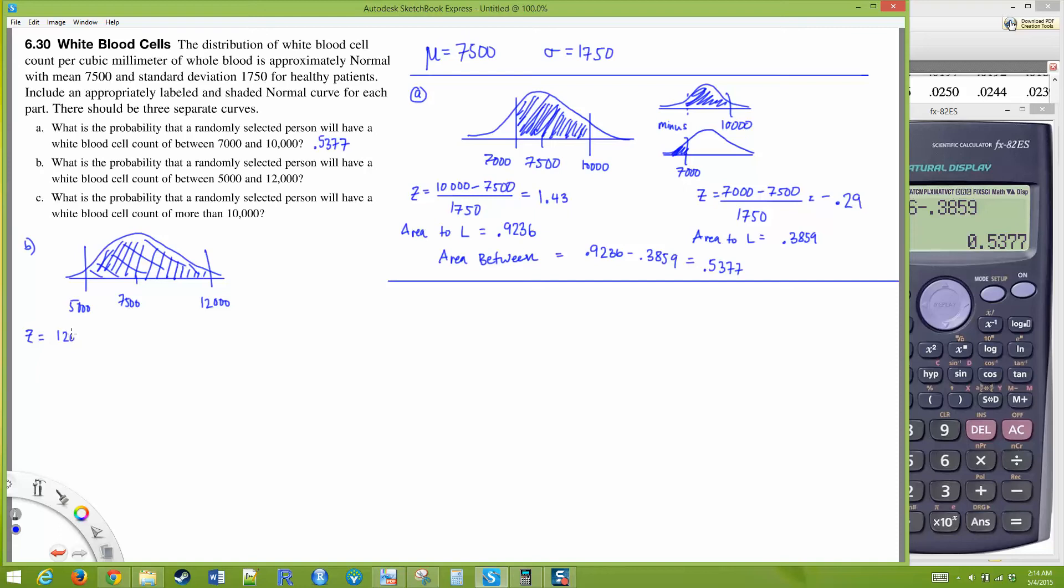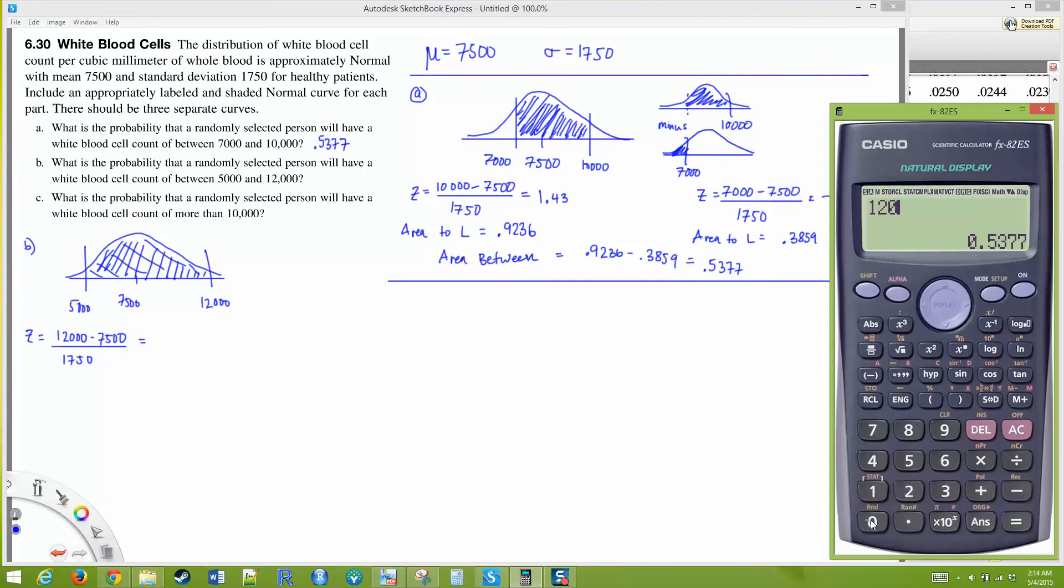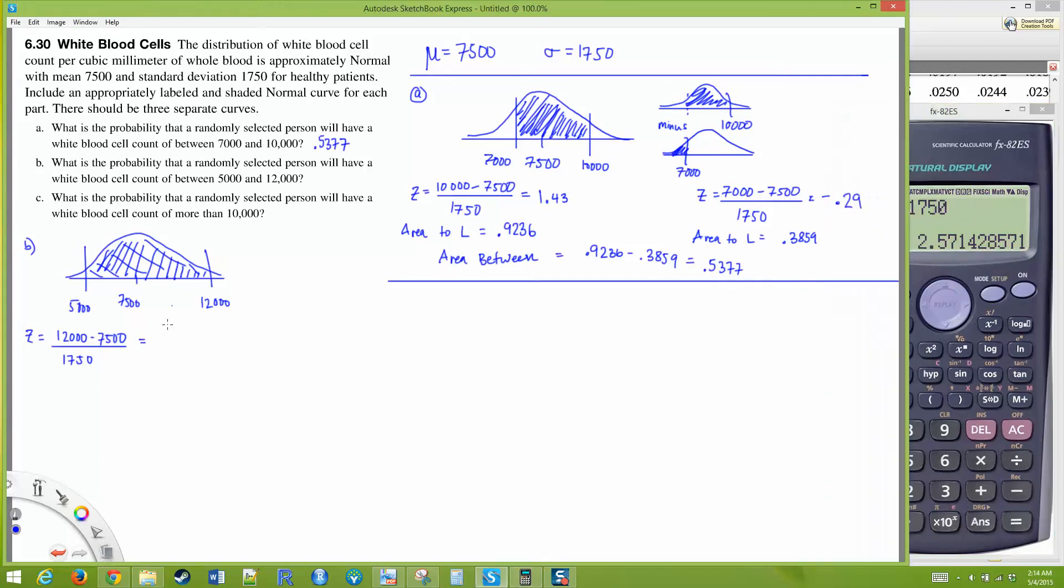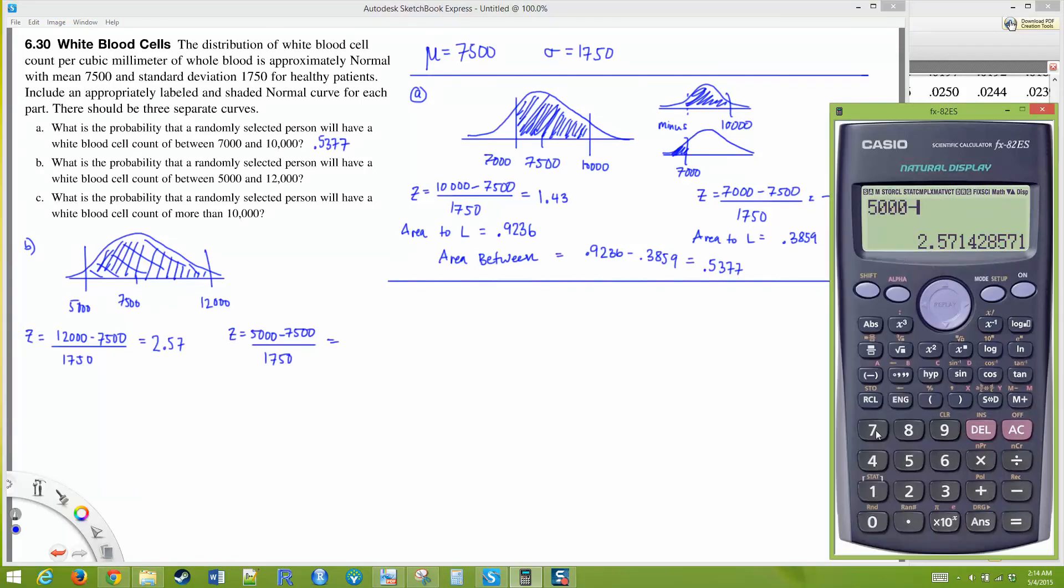For 12,000, z equals 12,000 minus 7500 divided by 1750. I get a z score of 2.57. For 5000, z equals 5000 minus 7500 divided by 1750. I get a z score of negative 1.43.